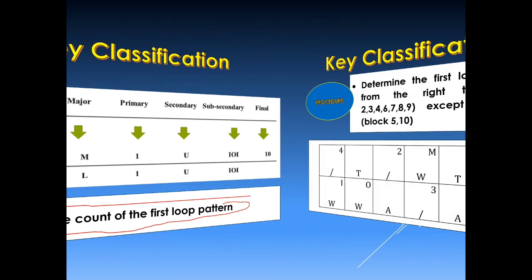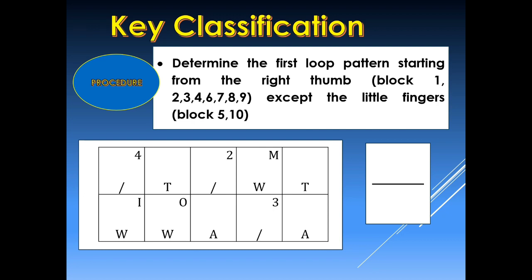For our procedure under key classification, we determine the first loop pattern. We start from the right thumb — block 1. If there is no loop pattern in block 1, we look in block 2; if none in block 2, we proceed to block 3, then block 4. After block 4, we proceed to block 6, block 7, block 8, and block 9. Take note: we do not include the little fingers — block 5 and block 10 — when looking for the first loop pattern.